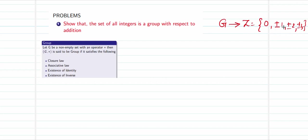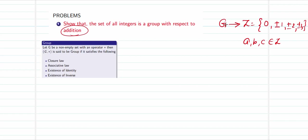Whenever an infinite set is given, we will have to prove the property with respect to a general format, which means for any elements a, b, c that belong to the set of integers, the property has to hold true — not for one particular case alone. Avoid using examples to prove properties of such kind. The binary operation defined is addition, so the star now becomes plus.